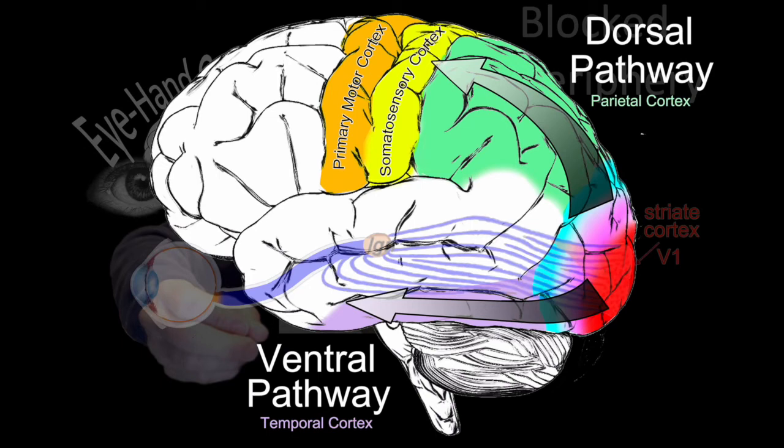Your primary motor cortex is up here. The signal goes through the parietal cortex to the somatosensory cortex and then to the primary motor cortex where the body is able to respond.